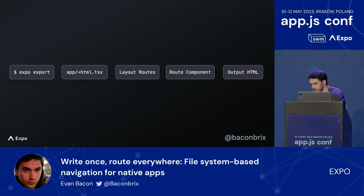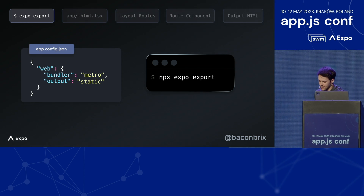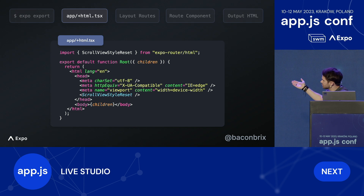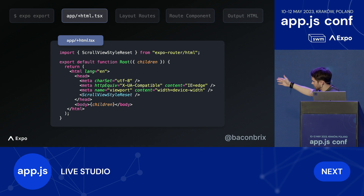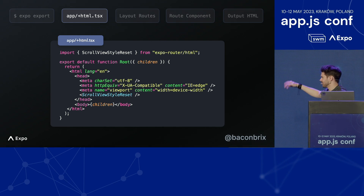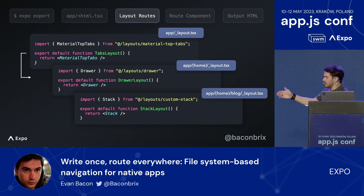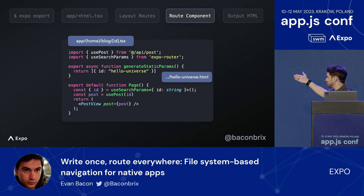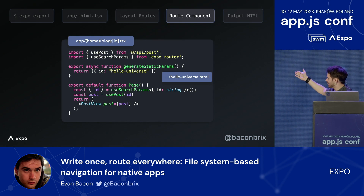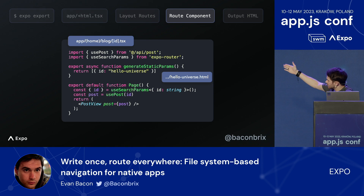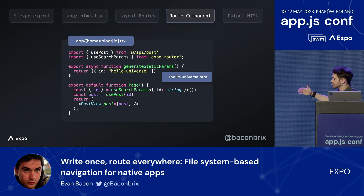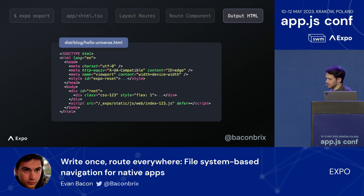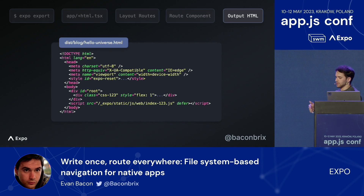Static routes work in five steps. First, you configure the project to use Metro for web and the new static output mode, then run the universal npx expo export command. Using the new plus HTML file, you can wrap all of your children with the HTML element — you have full control over it, good for things like Google Analytics or adding global styles. Then all the layout routes are sequentially rendered inside of each other up to the leaf route. We have a new generateStaticParams function, which is like Next.js's getStaticPaths — if you have a dynamic segment, you can export a bunch of different variable content, great for things like blogs or conference apps. Finally, the static HTML is written to disk and ready for uploading to any hosting service.